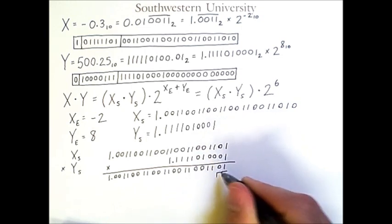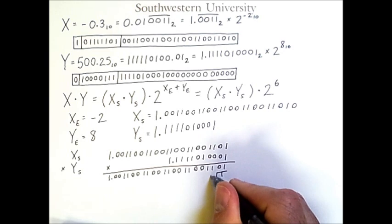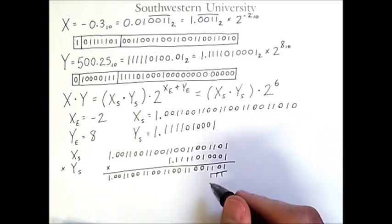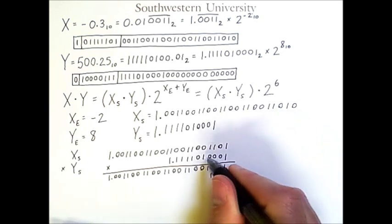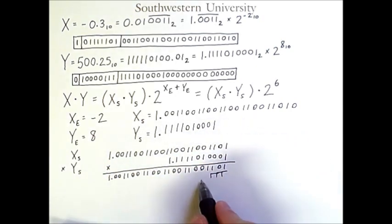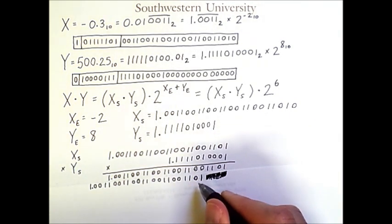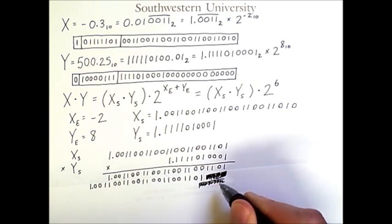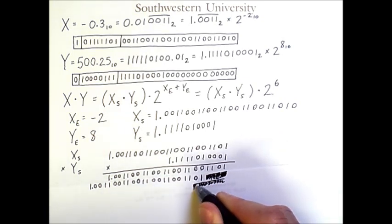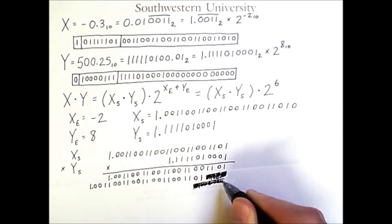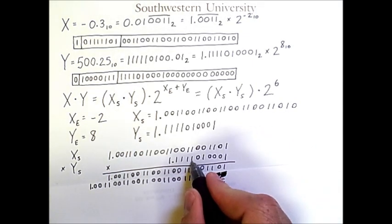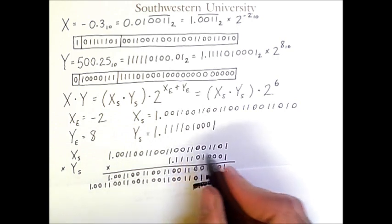And then 0 again. Well that moves us over another column. And then 0 moves us over another column. And so it isn't until I get to this one that I then copy this whole number again and put it here, which I'll now write out.